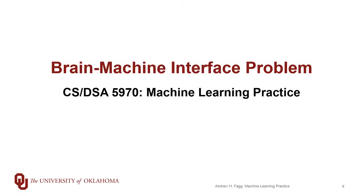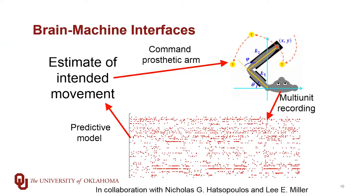Before we get into doing some work in regression in Python, I wanted to remind you about the data set we're working with. I introduced this data set on day one of the semester, but the larger context is that we're working with monkeys. We are doing multi-unit recording in an area of the brain called the primary motor cortex, and at the same time we get to observe how the monkey's arm is moving.